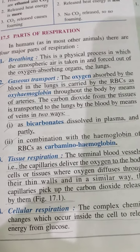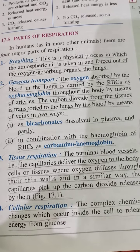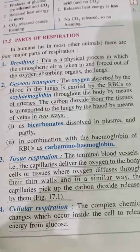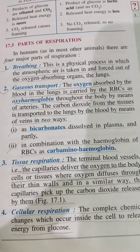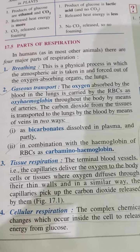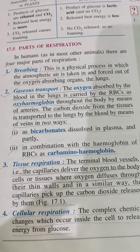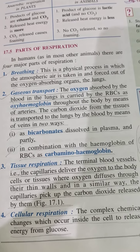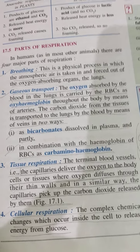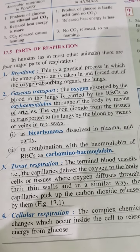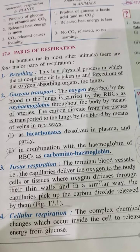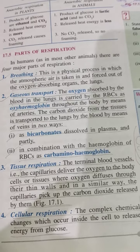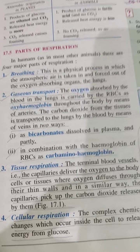Next is gaseous transport. The oxygen which we take inside is absorbed by the blood in the lungs and carried by the red blood cells as oxyhemoglobin throughout the body by means of arteries. The carbon dioxide from the tissues is transported to the lungs by the blood via veins in two ways, which we have to remember.